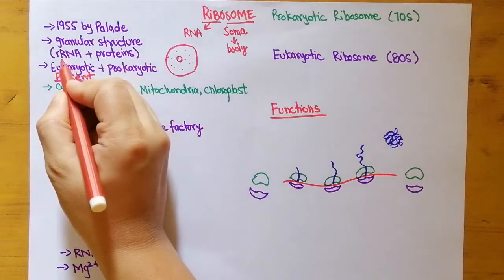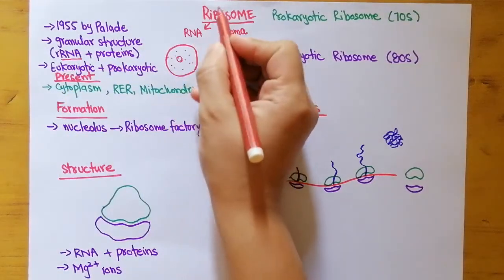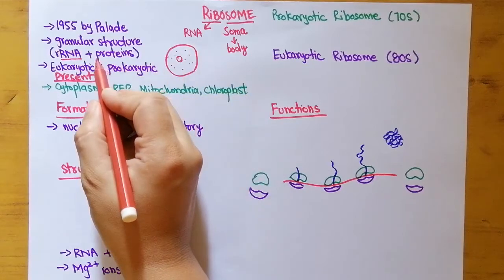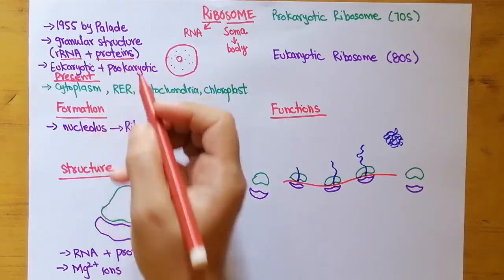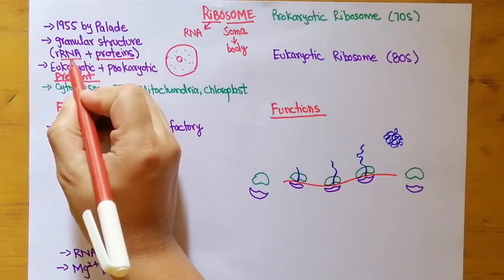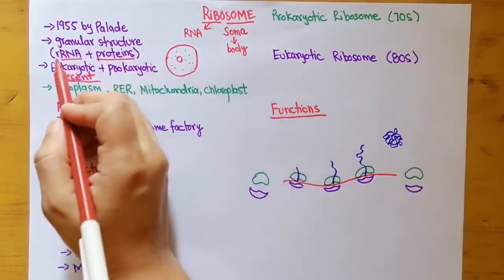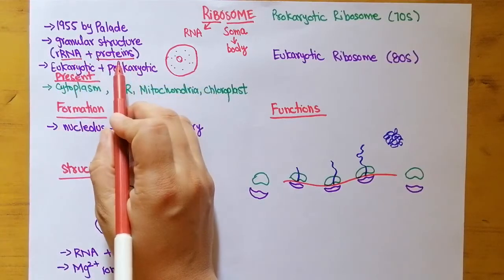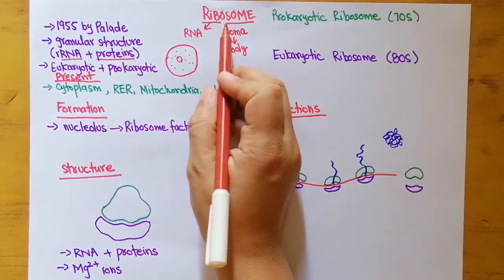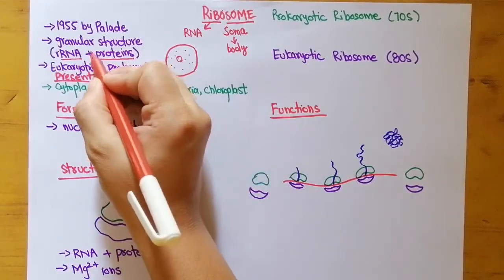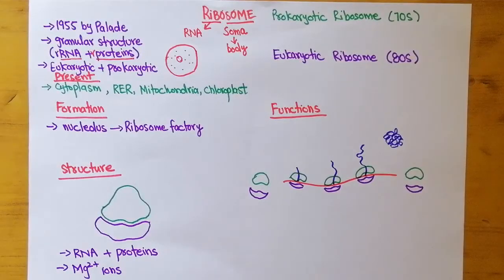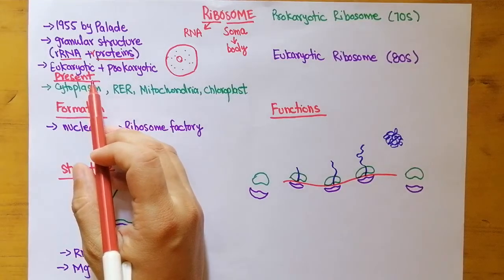If we talk about the composition of ribosomes, ribosomes are made up of RNA — as we have already noted from the name — along with proteins. The RNA present in the ribosome is called ribosomal RNA, and the proteins present inside the ribosome are known as ribosomal proteins.